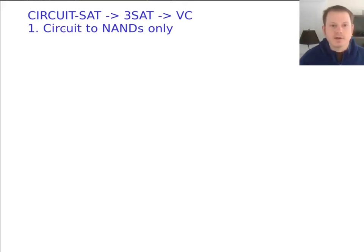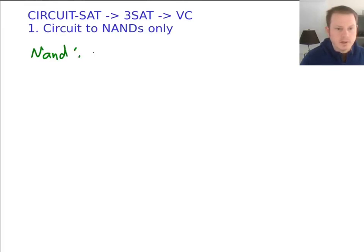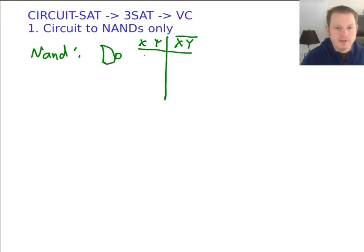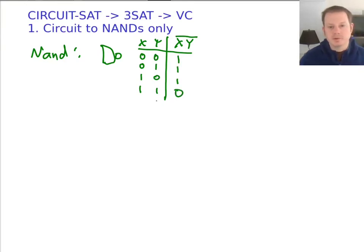So our approach requires a few steps — each step is believable enough, but putting them all together we have to remember a few things. The first is that we can take any circuit and convert it to NANDs only. A NAND is a gate with a bubble on the end — it's X and Y, negated. So the NAND is true except for when both inputs are true.